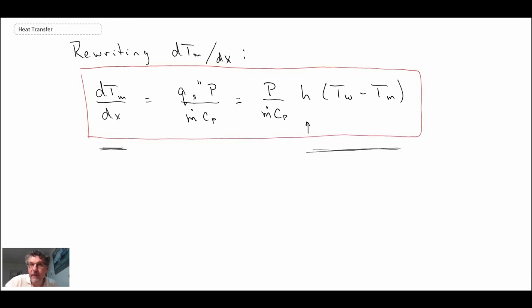the convective heat transfer coefficient in pipe flow does not change with position. So that is a constant outside of the entry region. These other two terms: if we can assume that the specific heat is remaining constant, mass flux is constant, and if it's a constant area duct or pipe, perimeter does not change, so those are constants as well.